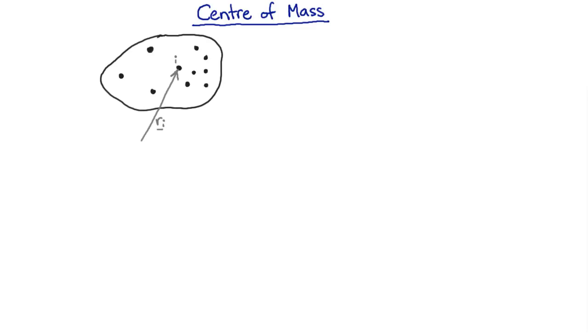And furthermore, each particle is going to have a particular mass. So my center of mass is just going to be at a position. So it's going to be described by a position vector, and it's going to be a sort of average position vector that's weighted by the mass of each particle.